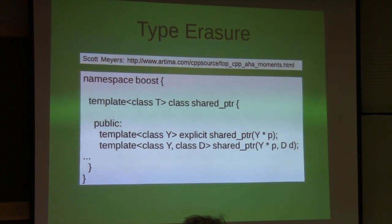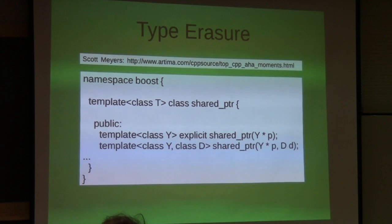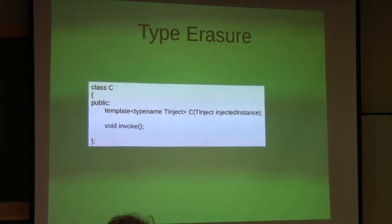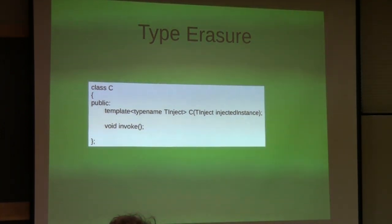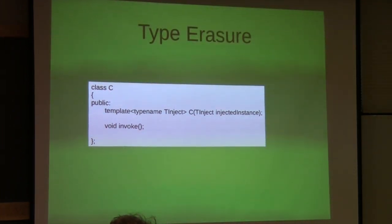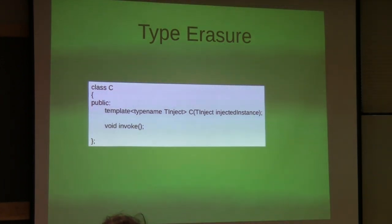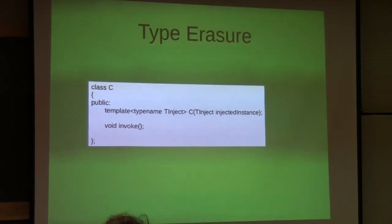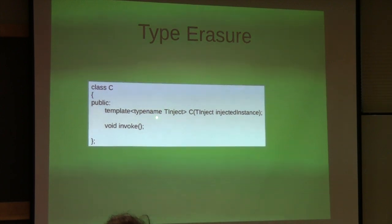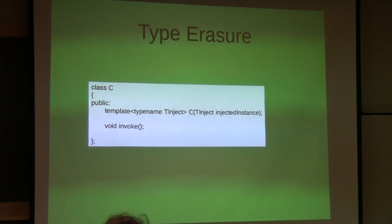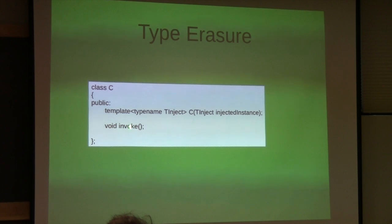I sat there with my jaw on the desk trying for about an hour to figure this out, and I couldn't, so I read on. The secret is type erasure. I'm going to show you an example by taking type erasure down to its barest bones - basically throw away all the shared pointer functionality and just have a class that gets a type injected into it. Notice that class C is not parametrized - there's no template there. The only template is in the constructor for C, where we inject a T_inject and give it an instance.